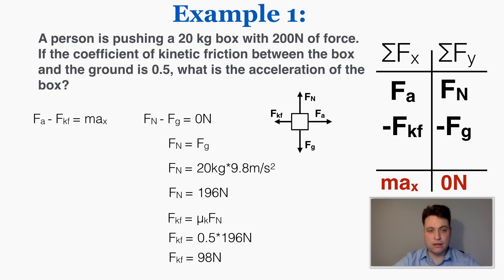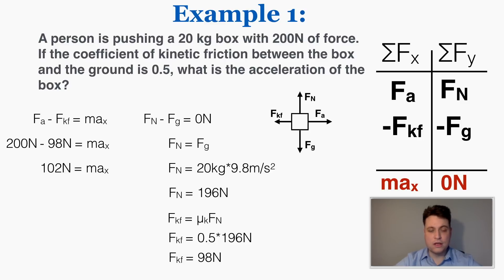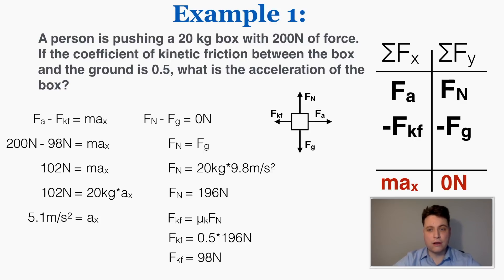I plug that into the x-axis equation. I know the person is applying 200 Newtons and the force of kinetic friction is 98 Newtons. So 200 minus 98 equals the net force, which is also equal to the mass times the acceleration in the x direction. I get 102 Newtons equals mass times acceleration, and when I plug in the mass I find that the acceleration of the box is 5.1 meters per second squared.